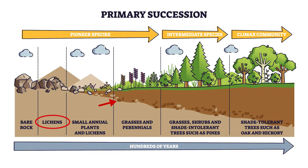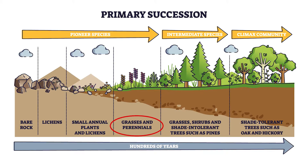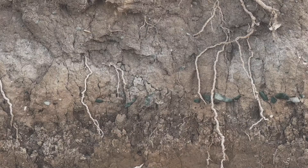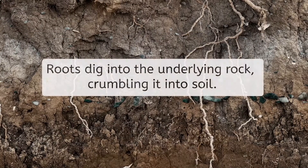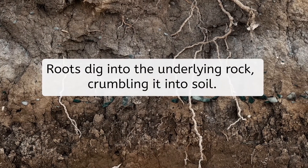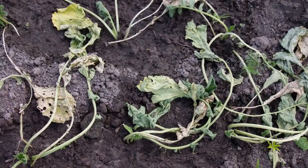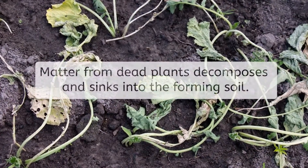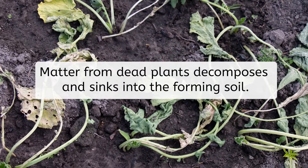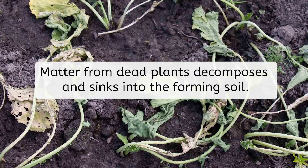That allows some smaller plants and flowers to take hold. What species will likely find its footing here next? Notice that the soil is getting thicker. Chances are, grass and perennial seeds that find their way here now will be able to grow and survive. But where is this thicker soil coming from? Two forces are at work here. As roots dig into the underlying rock, it crumbles a bit more, forming soil. Also, as plants die, the matter making them up decomposes and sinks into the forming soil, adding mass and filling it with nutrients.